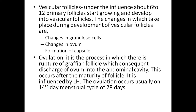Vesicular follicles: under the influence of FSH, 6 to 10 primary follicles start growing to develop into vesicular follicles. Changes which take place include: changes in the granulosa cells, changes in the ovum, and changes in the formation of the capsule. Ovulation is the process in which there is rupture of the Graafian follicle with consequent discharge of the ovum into the abdominal cavity, occurring after maturity of the follicle.